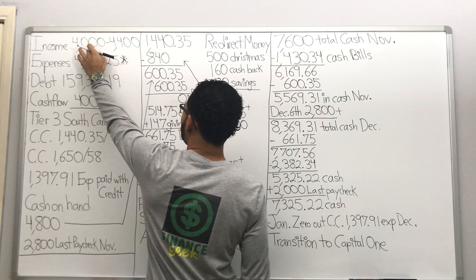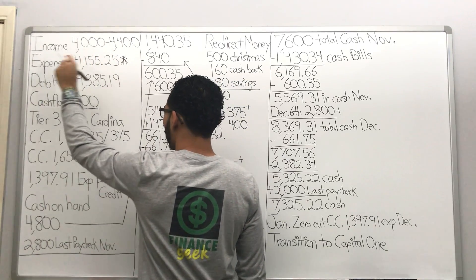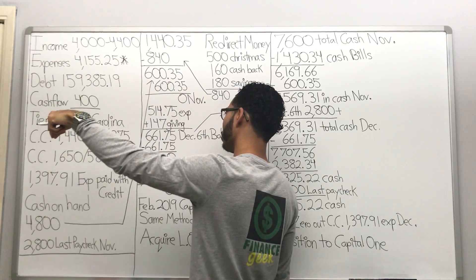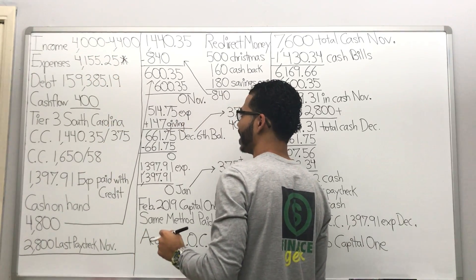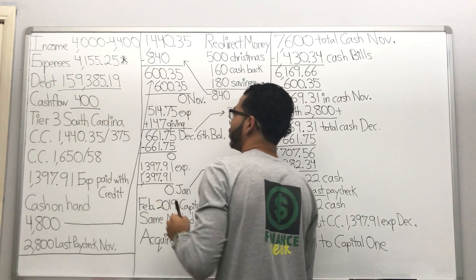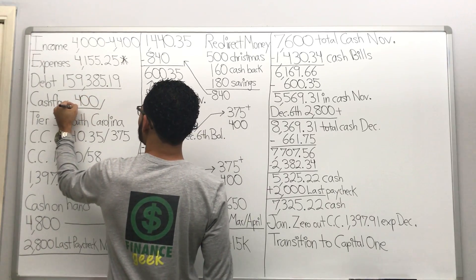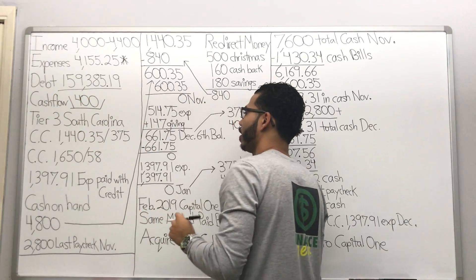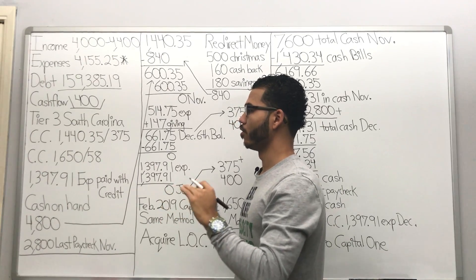And we begin. Income $4,000 to $4,400, expenses starting out the month of November $4,155.25, total debt starting out $159,000. Here's our current cash flow, conservative, very conservative cash flow of $400.